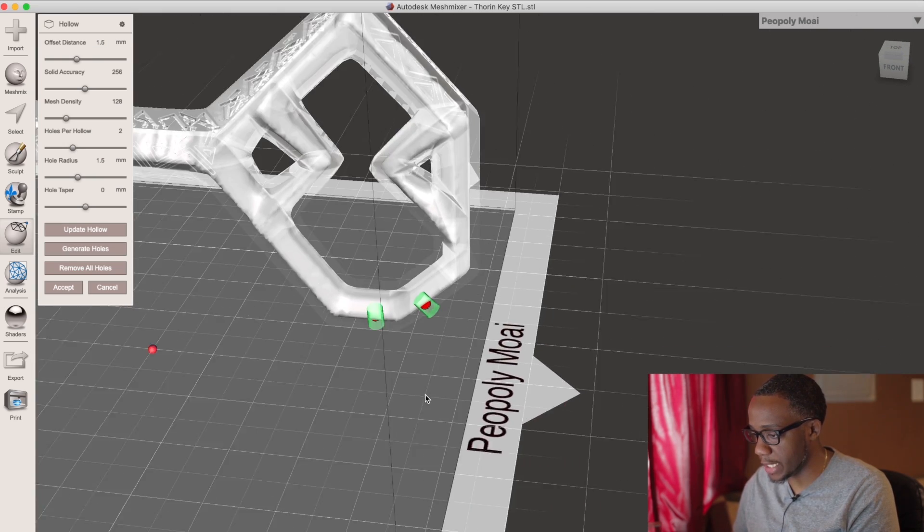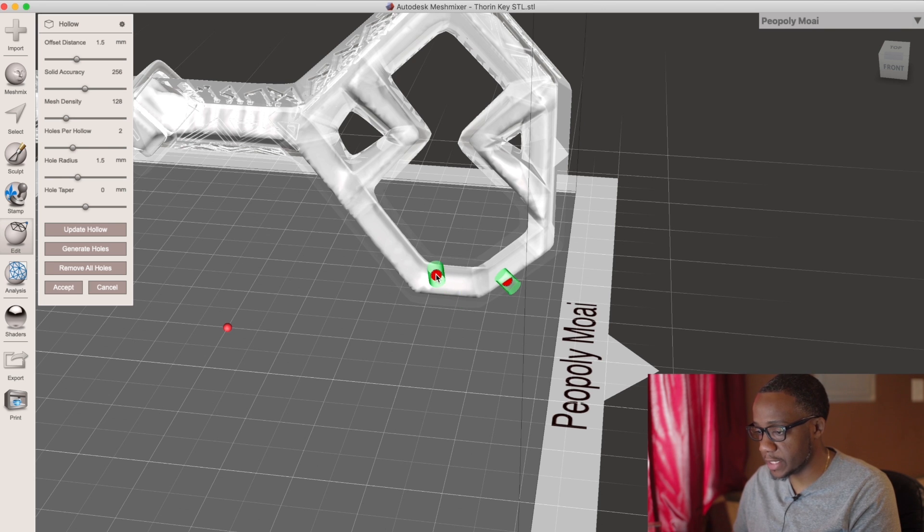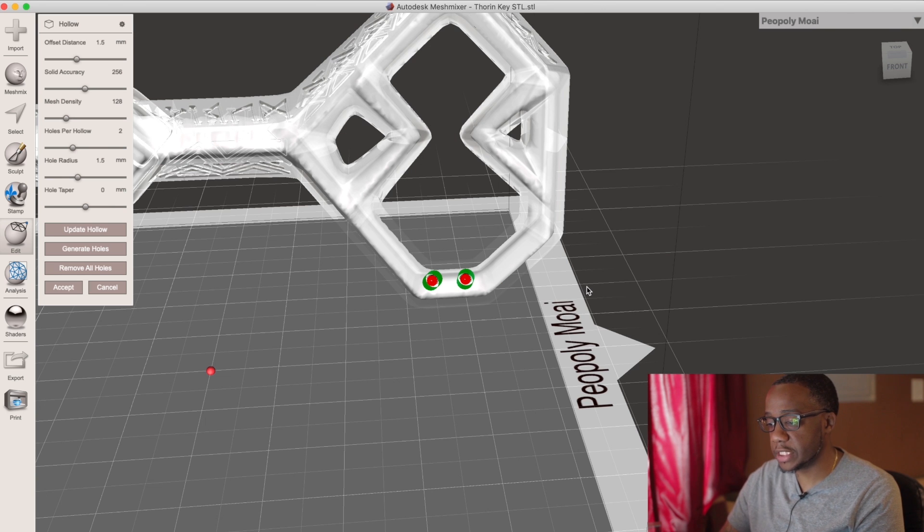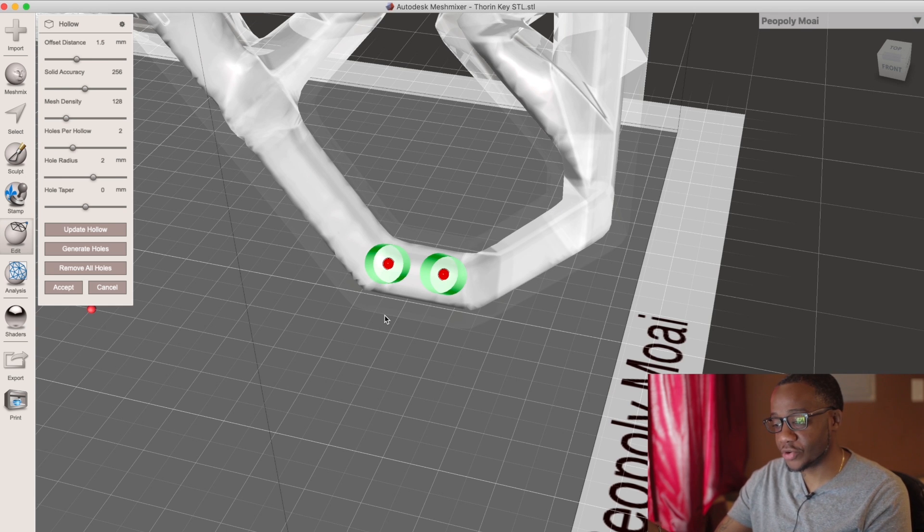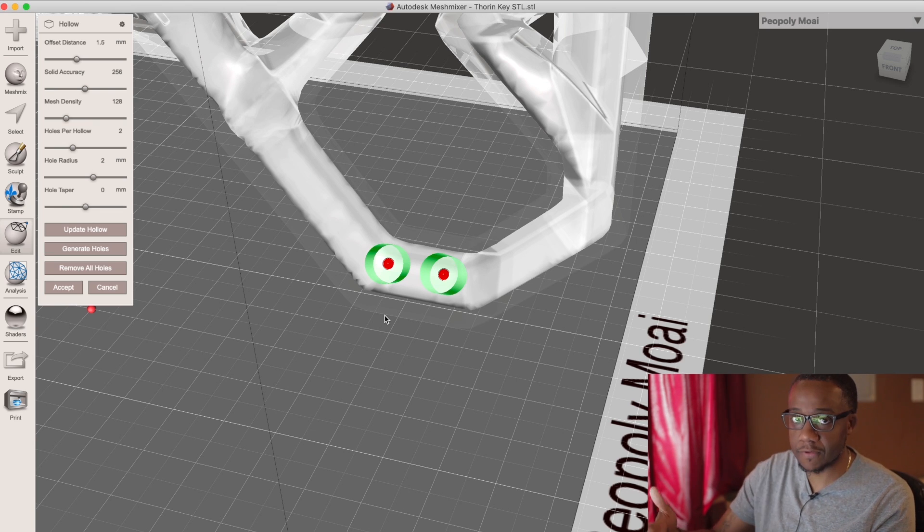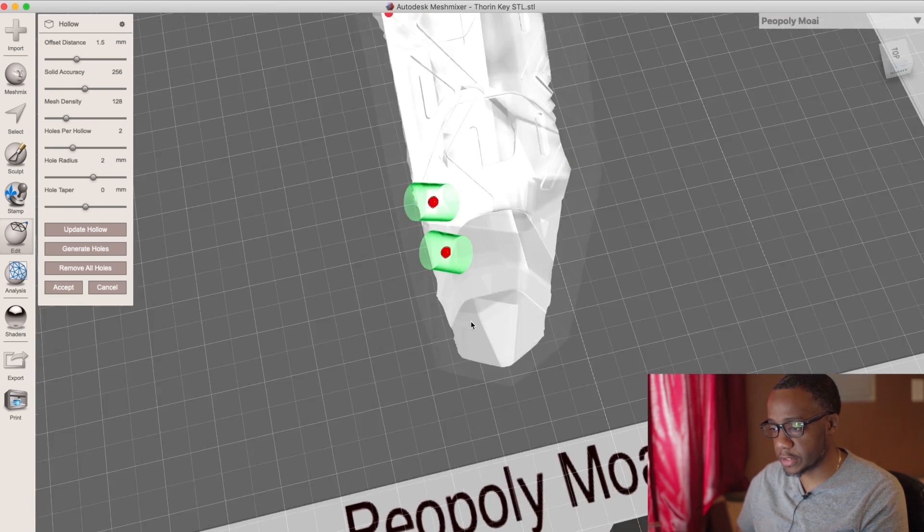Let's generate some holes so the resin can escape. I'm going to strategically put the holes in an area where I know I can reach to fill it in once we get ready to clean it up. I'm widening the holes to ensure the alcohol gets into the inside of the key and the resin gets cleaned out.